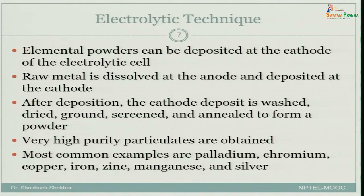It is a simple electrolytic cell — you have a cathode and an anode. At the anode, the raw metal is dissolved. The raw metal will probably not be very pure and will not be in powder state. But the material that is deposited at the cathode is very pure and is usually in powder form.